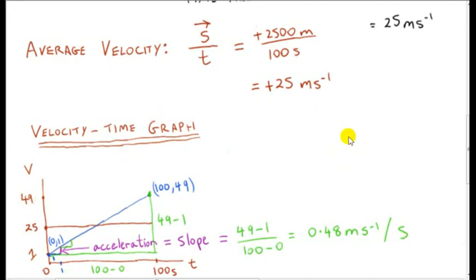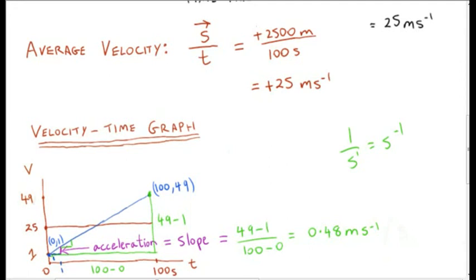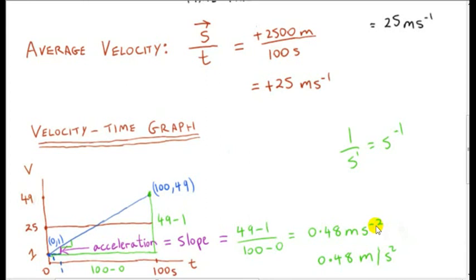We're dividing by s here. We know that 1 over s can be written as s to the power of minus 1. So instead of dividing by s, we can multiply by s to the power of minus 1, and we just add the powers. Adding minus 1 onto minus 1 gives minus 2. So this is read meters per second per second. We could also write 0.48 meters per second squared. So we can write it either way — it's the unit of acceleration.